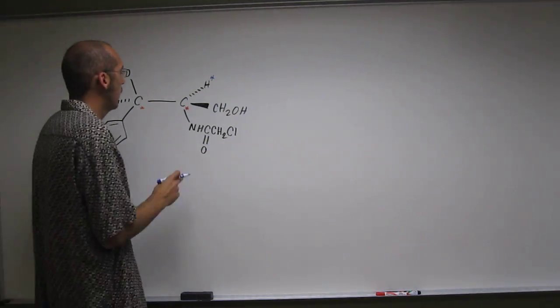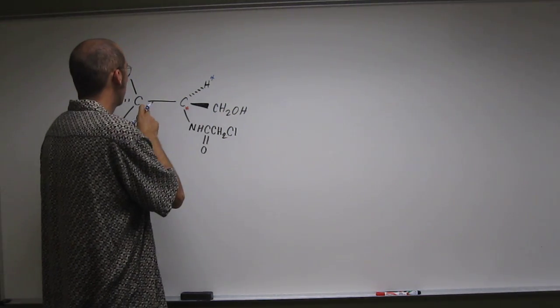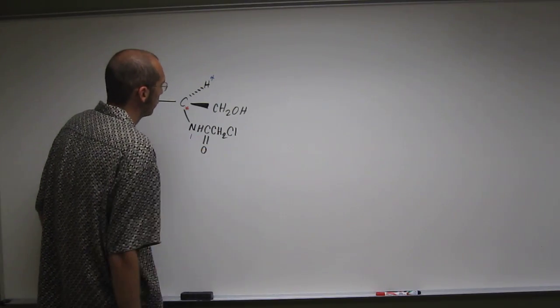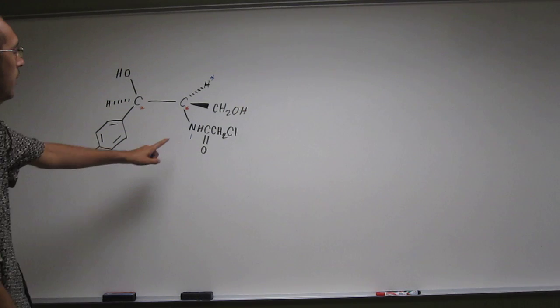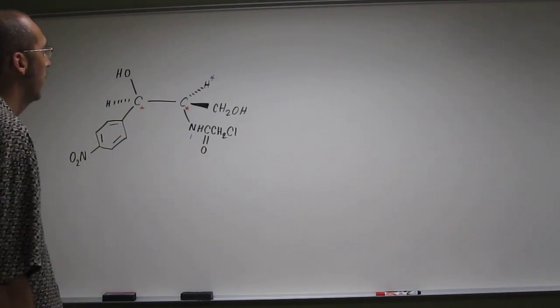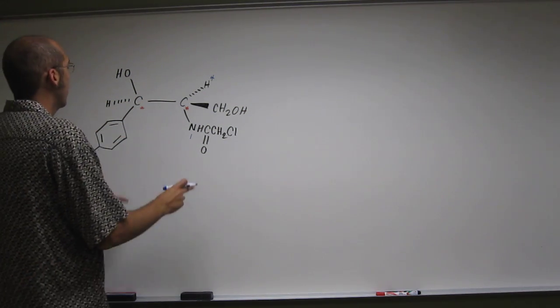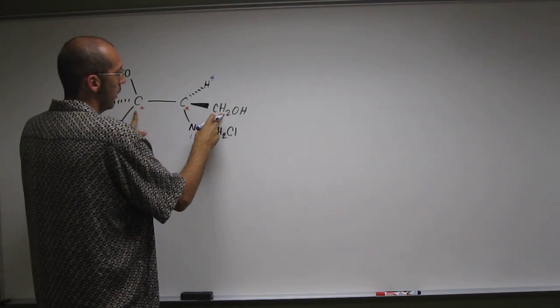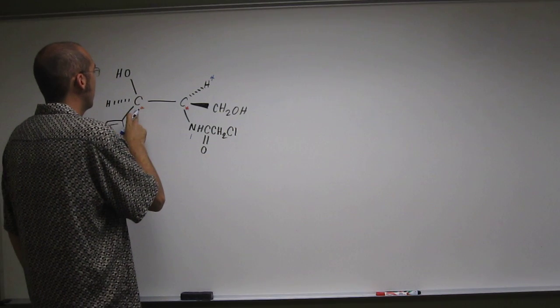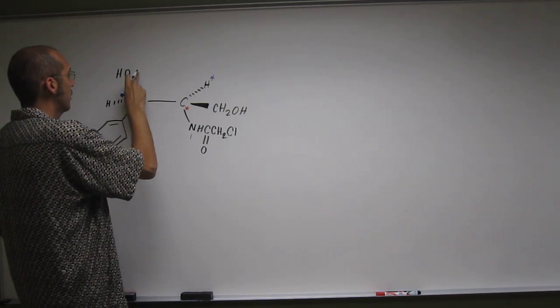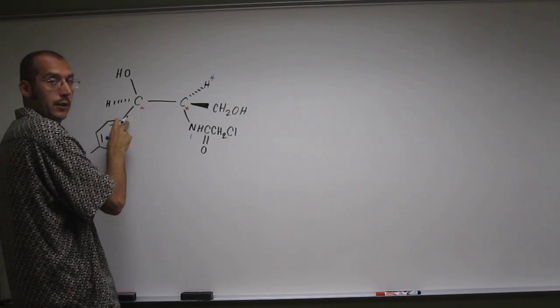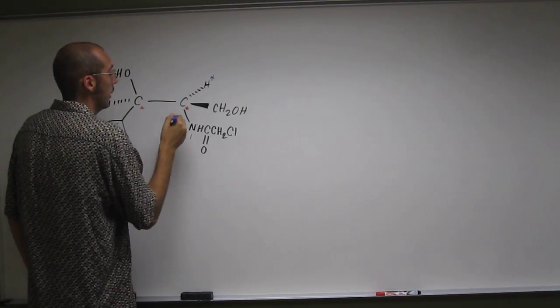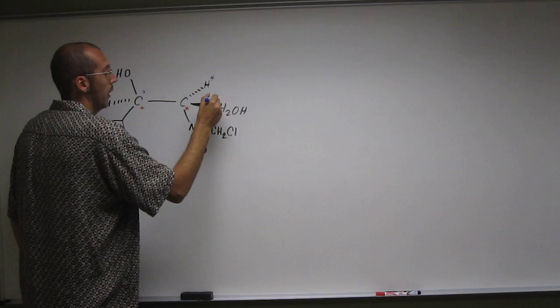So now we've got to choose between nitrogen, carbon, and carbon. Well, nitrogen is bigger, so that's going to be number one. That's the highest priority because it's bigger than carbon, carbon, and hydrogen. And now we've got to decide between these two carbons. Which one's bigger? This carbon's attached to hydrogen, hydrogen, and oxygen. This carbon's attached to hydrogen, oxygen, and carbon. So this one is actually bigger because carbon is bigger than hydrogen. So we've got two and three.